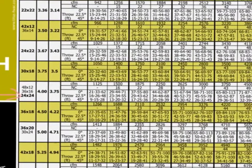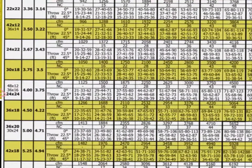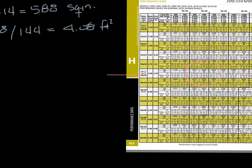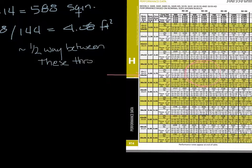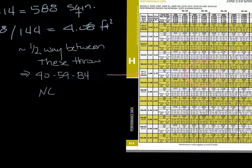Now find the airflow closest to 2000 CFM. In this case it's about halfway between 1875 and 2250 CFM, so the throw would be about halfway between those two throws — that's 40 at 150 feet per minute, 59 at 100, and 84 at 50 feet per minute. The sound would also be about halfway between NC-22 and NC-28, so about NC-25.